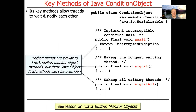The method names here are similar to the method names in Java's built-in monitor object interface. Java's built-in monitor objects come from inheriting from the Object class, which is the root of all classes in Java reference types. The methods that come out of that are wait, notify, and notifyAll.